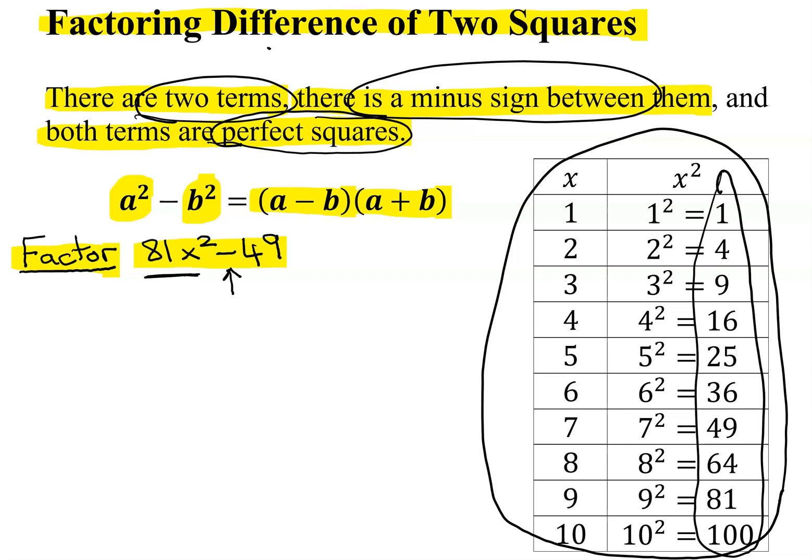If you notice, 81 is 9 squared, and 49 is 7 squared. So this is definitely the difference of two squares.